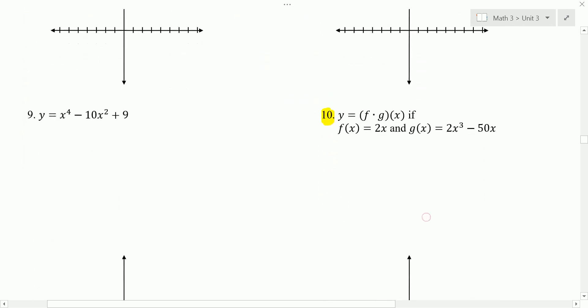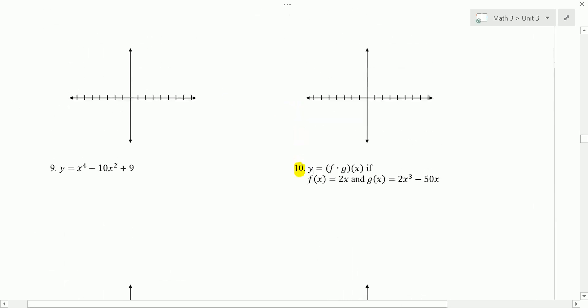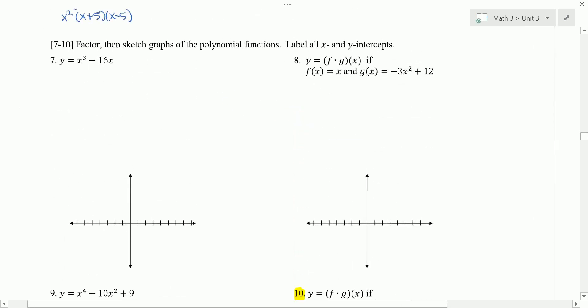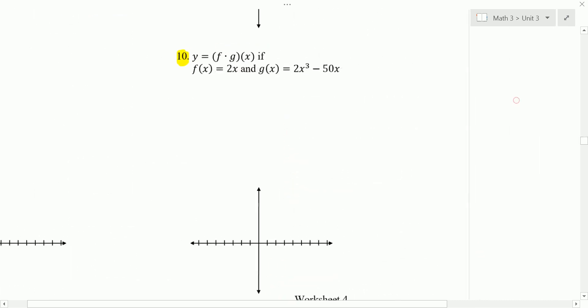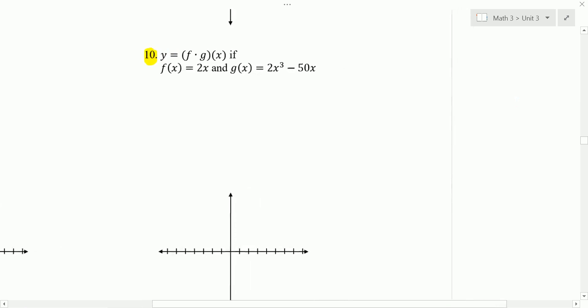Next, I want to take a look at number 10. The instructions here are to factor, then to sketch the graph of the polynomial function. Label all x and y intercepts. So this notation here is saying f times g of x. Or another way to write that is f of x times g of x. Multiply the two functions together.